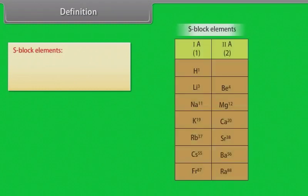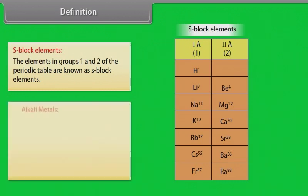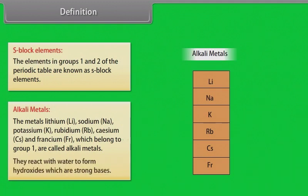Definition. S-block elements: The elements in group 1 and 2 of the periodic table are known as S-block elements. Alkali metals: The metals lithium, sodium, potassium, rubidium, cesium and francium, which belong to group 1, are called alkali metals.